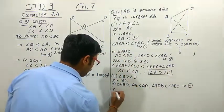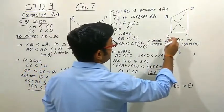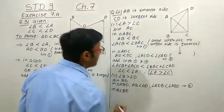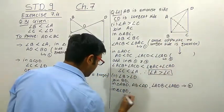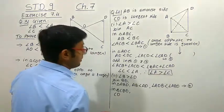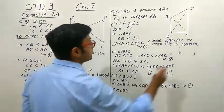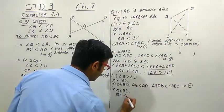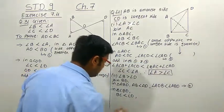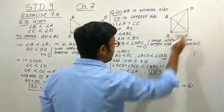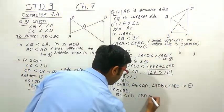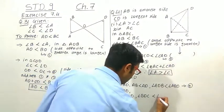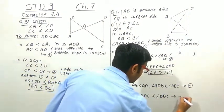Now consider triangle CBD. CD is the greatest side, so BC is less than CD. The angle opposite to BC is angle BDC, and the angle opposite to CD is angle DBC. Therefore angle BDC is less than angle DBC. Give it inequality number 4. Reason: angle opposite to longest side is greater.